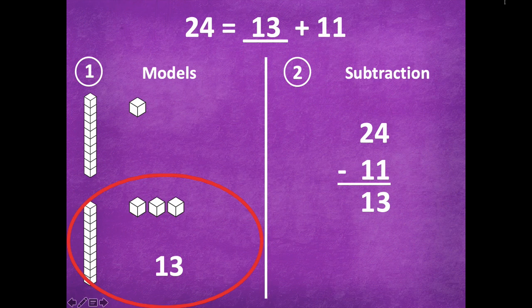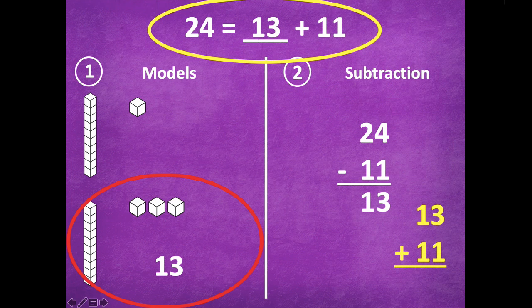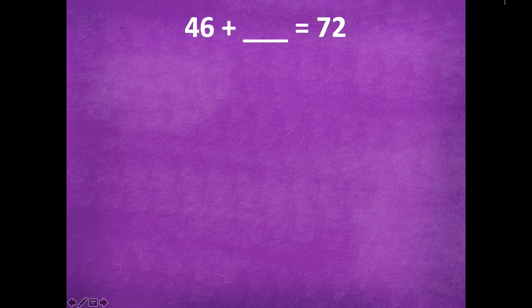So 13 plus 11 equals 24. Remember, you can check that by actually solving this problem. So you could come down here and you could solve 13 plus 11. If I get 24, which is the sum, then I have correctly identified that missing addend. So in the ones place, 3 plus 1 is 4, and in the tens place, 1 ten plus another ten equals 2 tens, and I got 24. Whoop whoop! So that means that I solved this correctly for the missing addend.